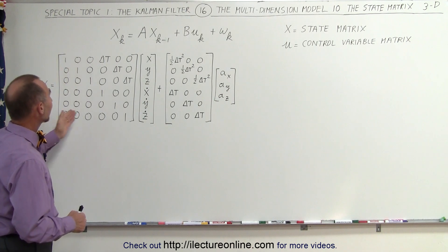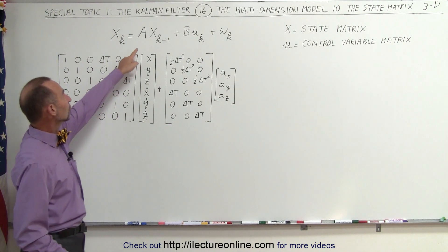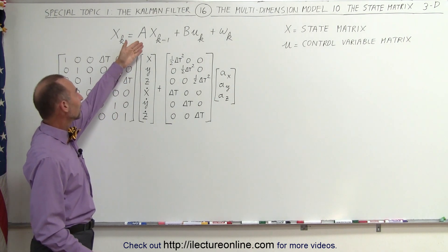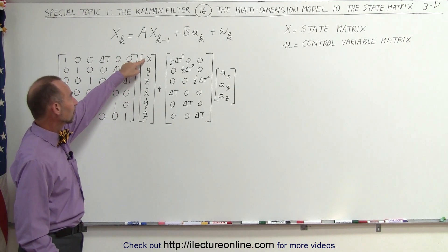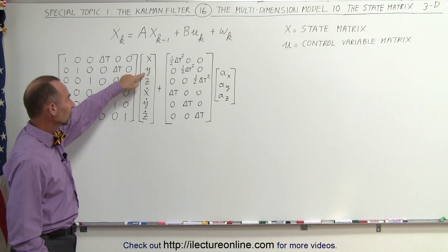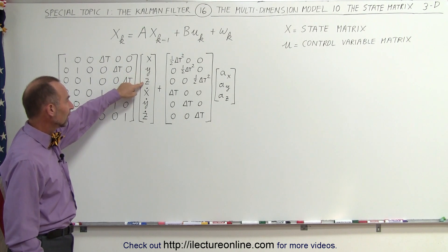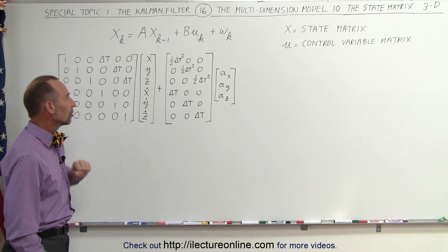We end up with a 6 by 6 A matrix. We have a state matrix where we have the x position, the y position, the z position, and the velocity in the x, the y, and the z direction.